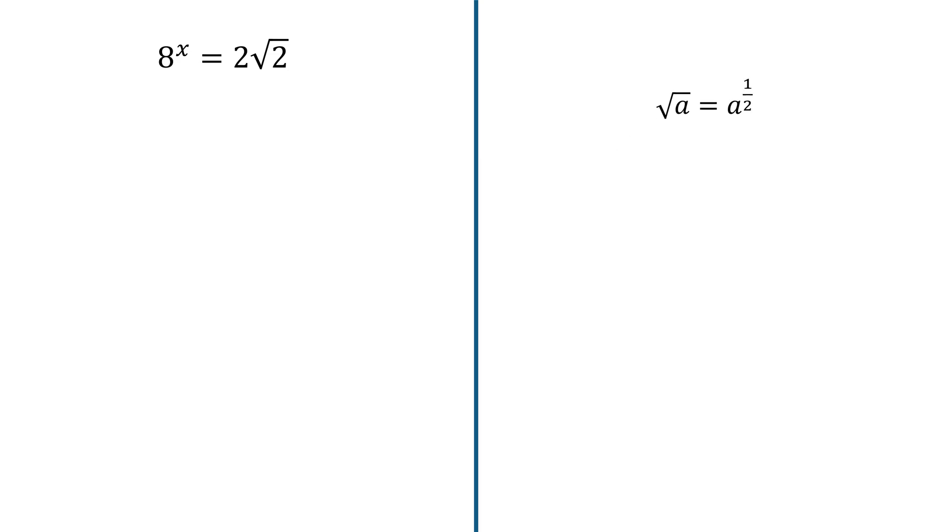The first thing we'll do is to rewrite the square root as a power of half, because the square root can be written as a power of half. So we quickly do that, and we get 2 to the power of 3, because 8 is the same as 2 to the power of 3, all to the power of x equals 2 times 2 to the power of half.